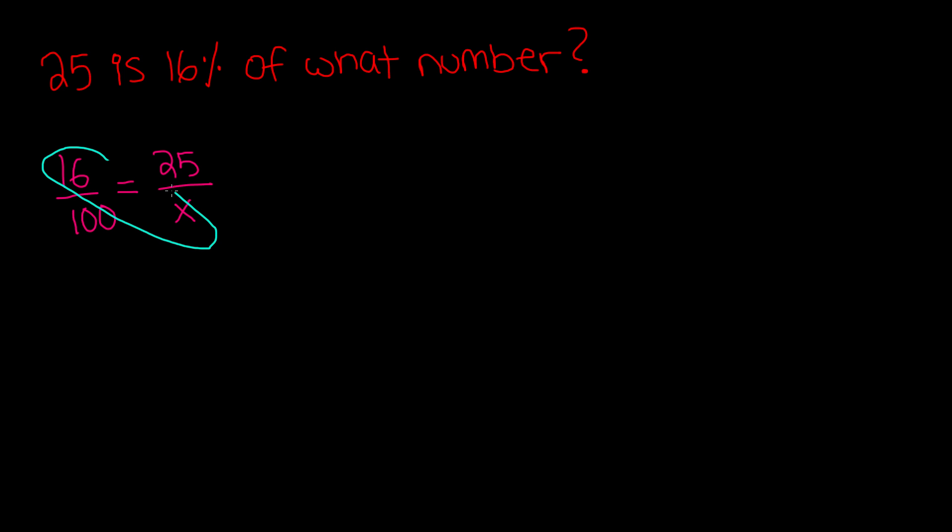Now go ahead and do cross multiplication, 16 times x and 25 times 100. You get 16x is equal to 2,500. When you divide both sides by 16, you get x is equal to 2,500 divided by 16. Now you could go ahead and use a calculator, but I'm just going to go ahead and do the entire division now. So 2,500 divided by 16.